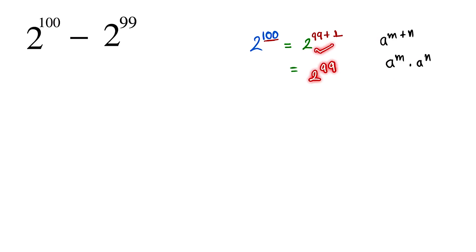Now we substitute this value. We can write: 2 to the power 99 times 2 to the power 1, minus 2 to the power 99.